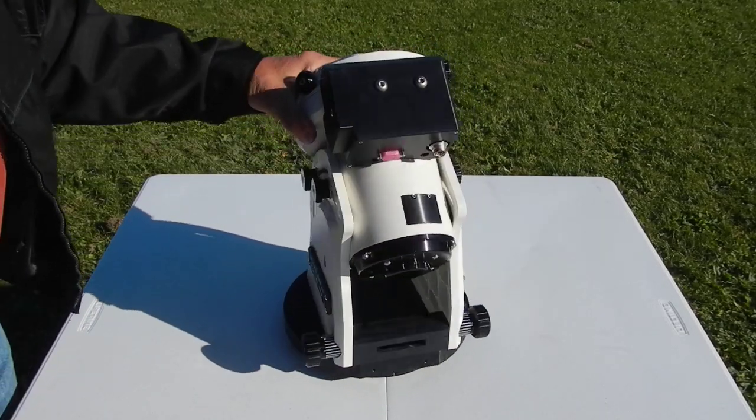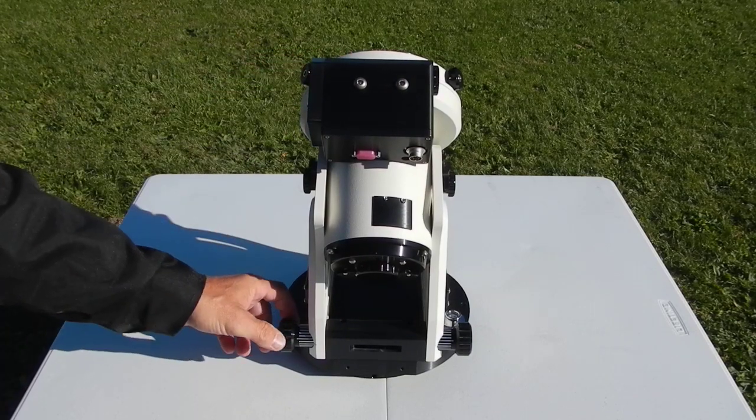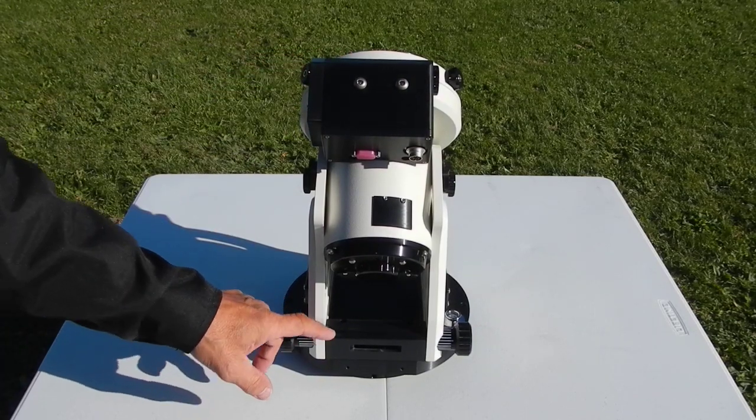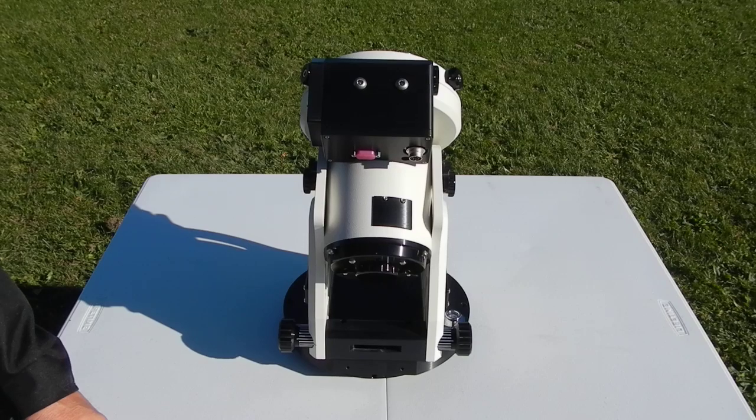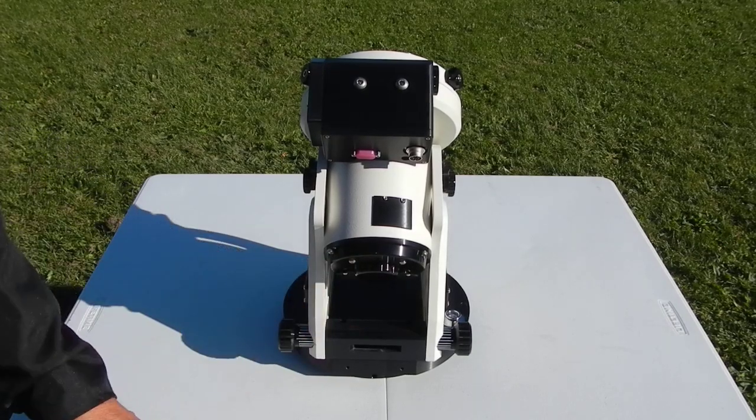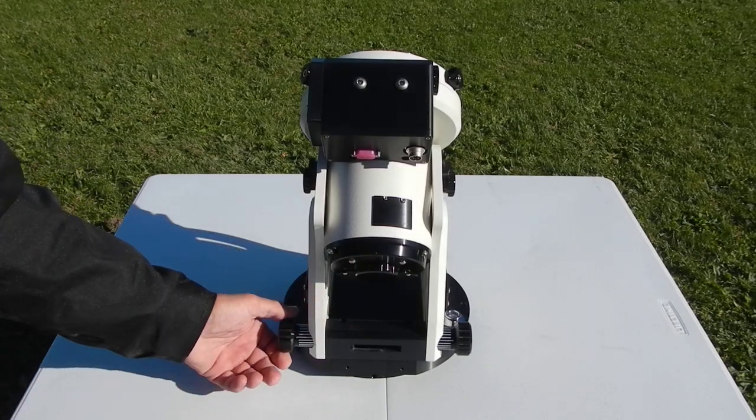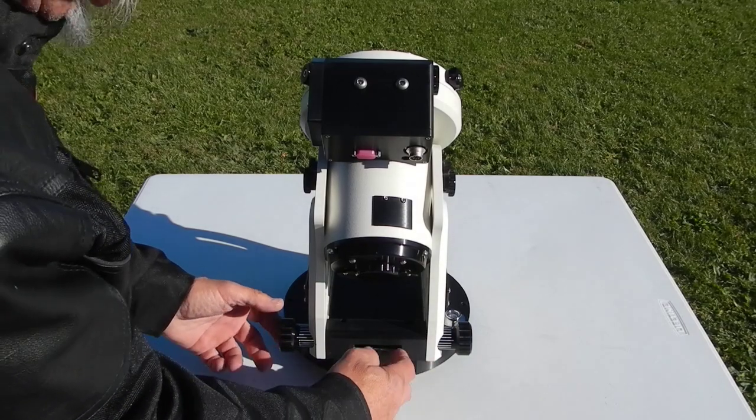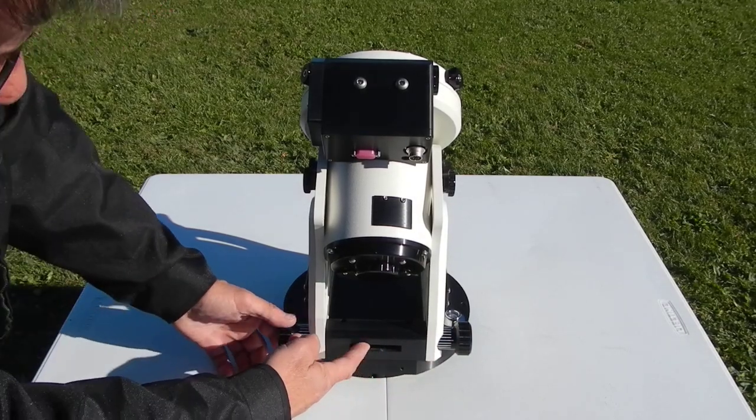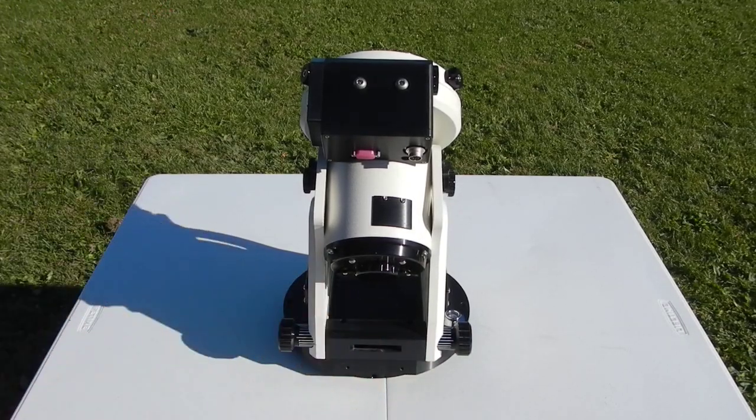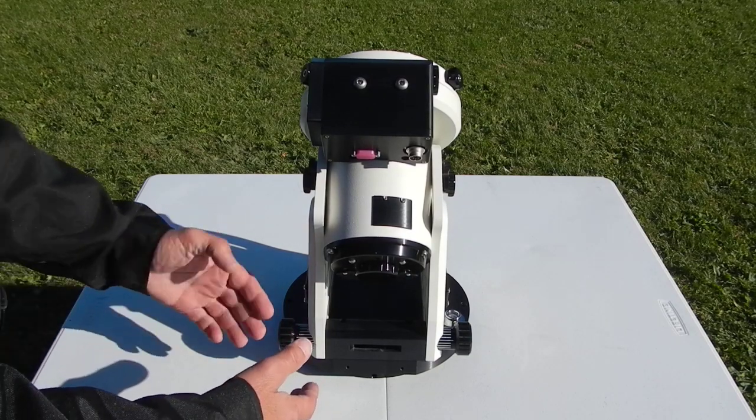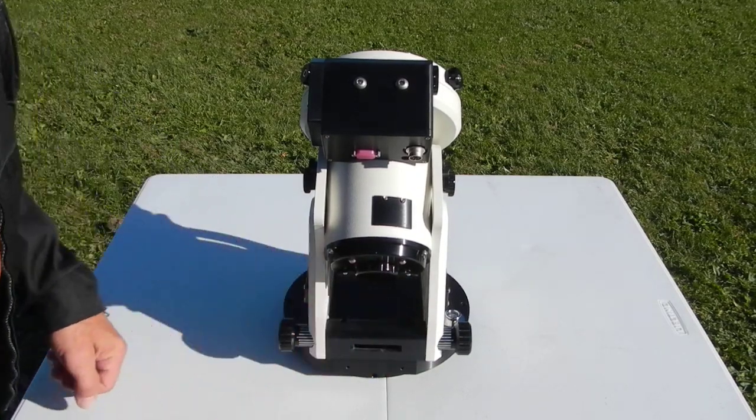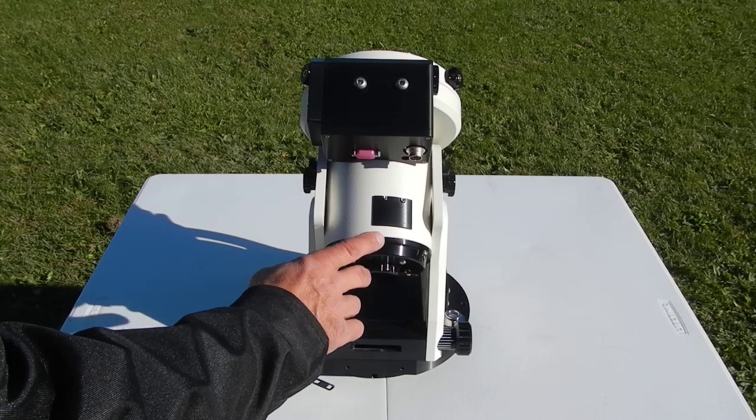On the back side, this is what controls your azimuth when you're getting it polar aligned. You push pull on this plate in here and it allows you to go whatever direction you need to go to get the polar star.